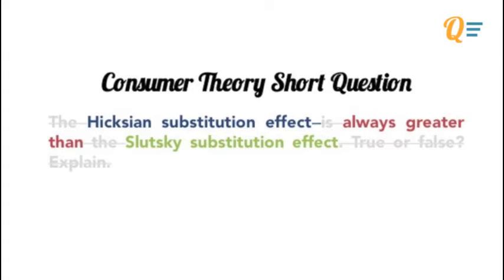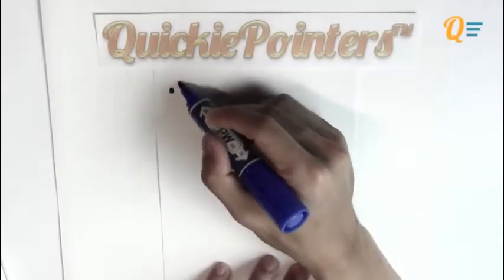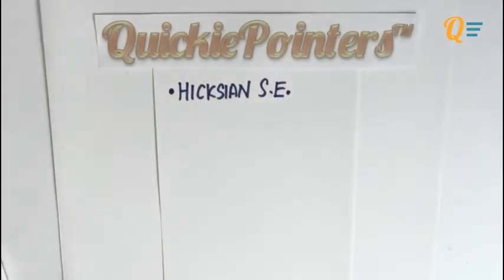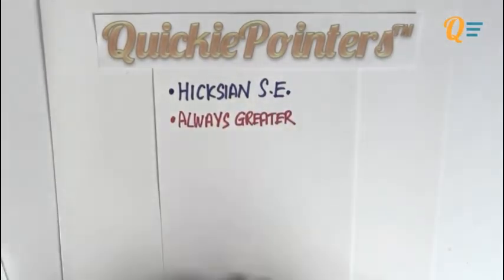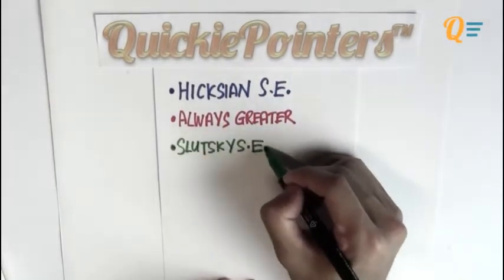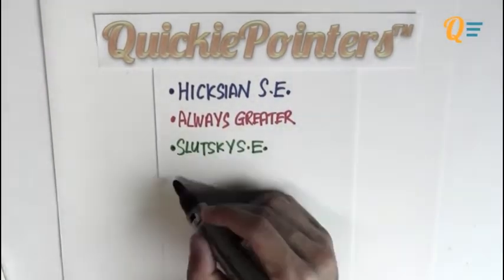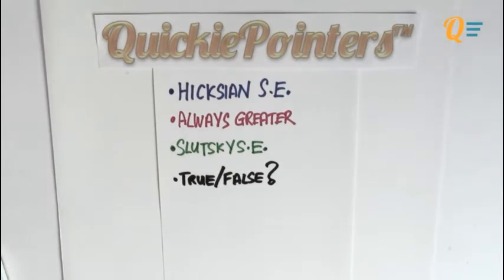It's going to be the Hicksian substitution effect, always greater than the Slutsky substitution effect. I'm just going to write down my three quickie pointers, and at the bottom, I'm going to put in that I have to answer whether this is true or false, and I have to explain it.